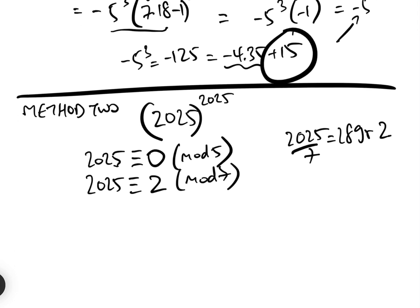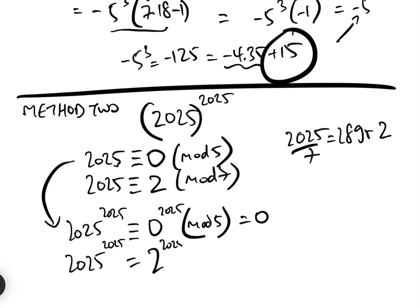So therefore, 2025 to the 2025 equals 0 to the 2025 mod 5, which clearly equals 0. And 2025 to the 2025 mod 7 equals 2 to the 2025 mod 7. And 2 to the 2025, well, let's have a look at that. What we need to do is we need to try and find something which is a power of 2, which is close to 7.